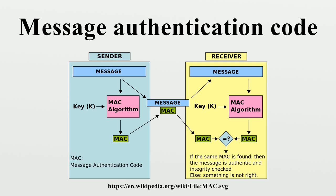While MAC functions are similar to cryptographic hash functions, they possess different security requirements. To be considered secure, a MAC function must resist existential forgery under chosen plaintext attacks. This means that even if an attacker has access to an oracle which possesses the secret key and generates MACs for messages of the attacker's choosing, the attacker cannot guess the MAC for other messages without performing unfeasible amounts of computation. MACs differ from digital signatures as MAC values are both generated and verified using the same secret key. This implies that the sender and receiver of a message must agree on the same key before initiating communications, as is the case with symmetric encryption.